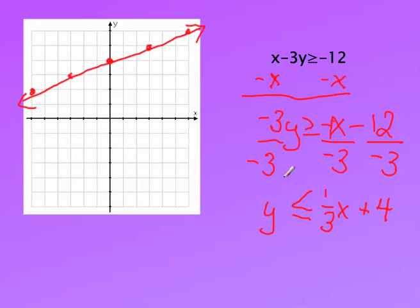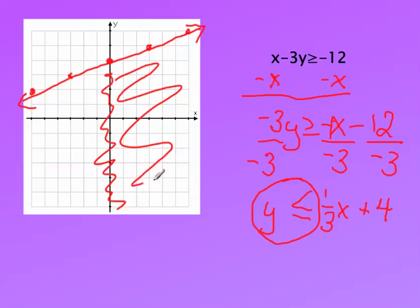And then since it's y is less than, and the y is by itself, what we're going to do is shade the lower region of our graph. Okay, the y part that's down or less than. So everything on this side of the graph is what gets shaded.